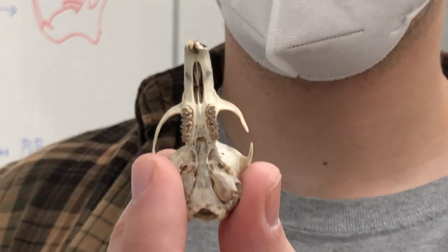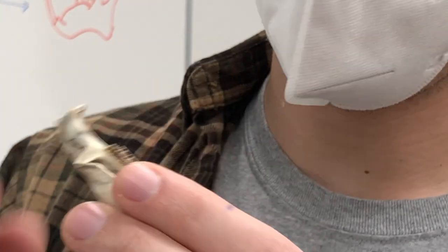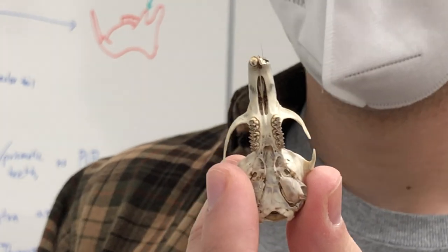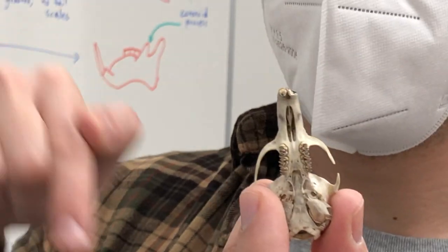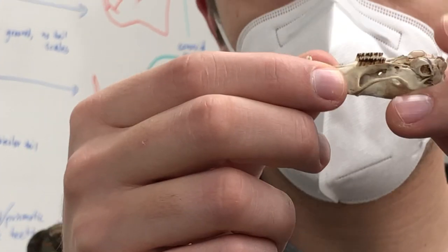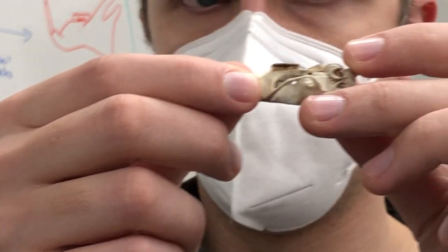I've mentioned prismatic teeth last week. So if you're looking top down, you can see a little outline on the surface of the tooth. And if you look from the side, you see that they're completely flat. There's no bumps.